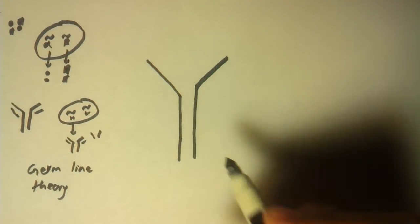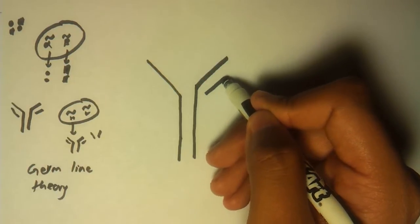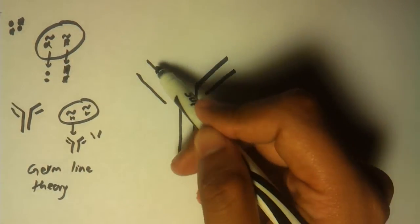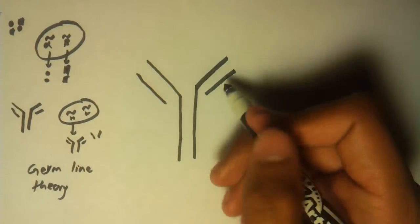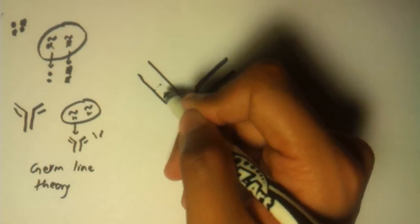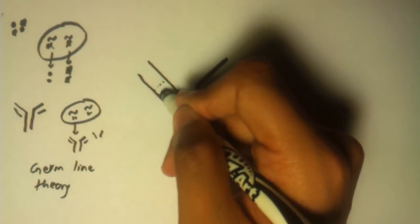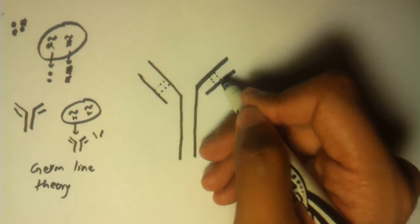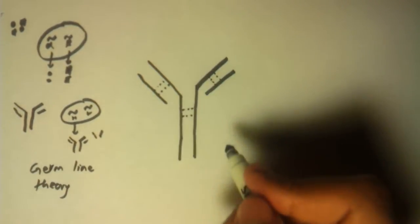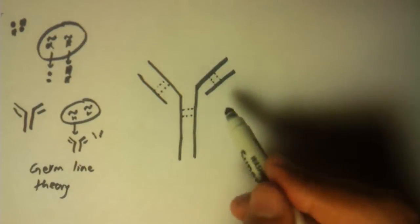So this is how our antibody looks like. Like I told before, these two are our heavy chains and these two are our light chains, and they are combined by disulfide bridges. If you guys don't know what disulfide bridges are, you could look it up on Google.